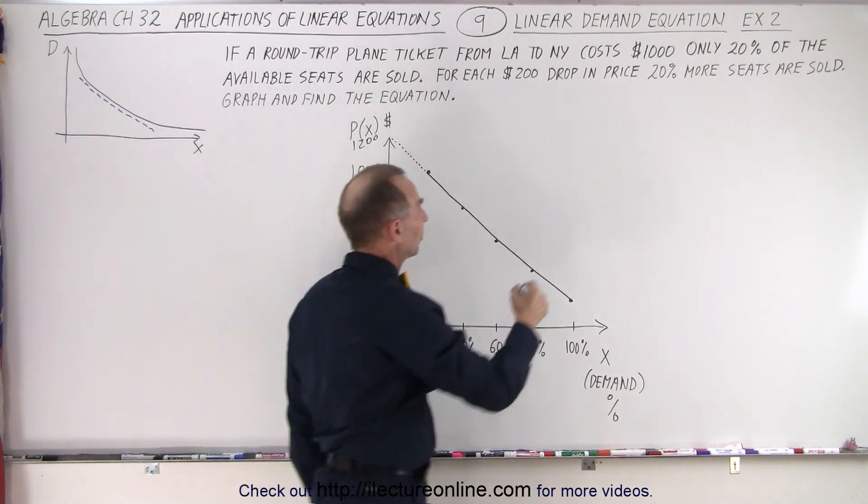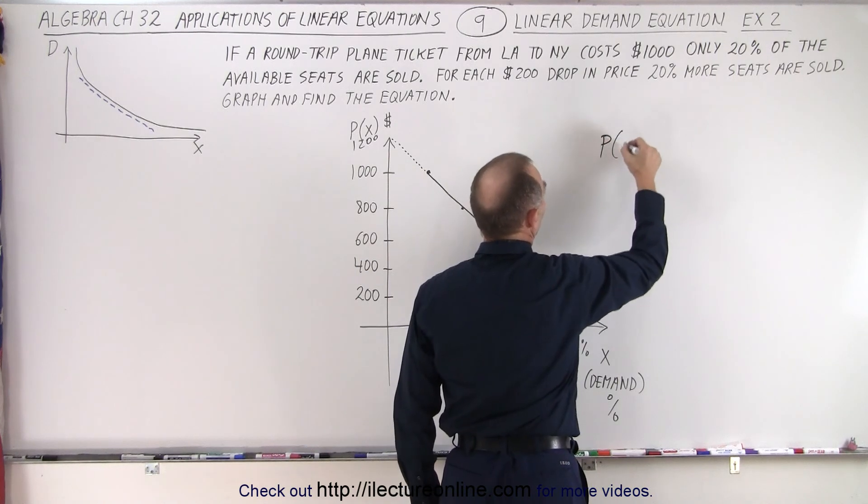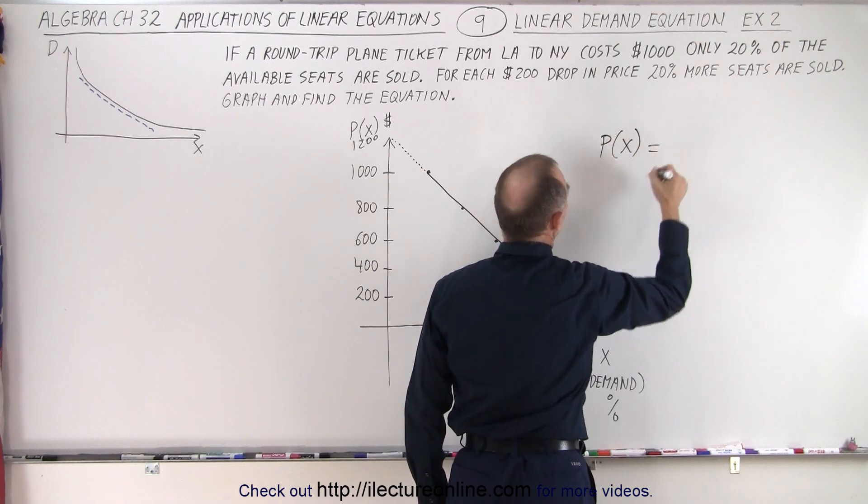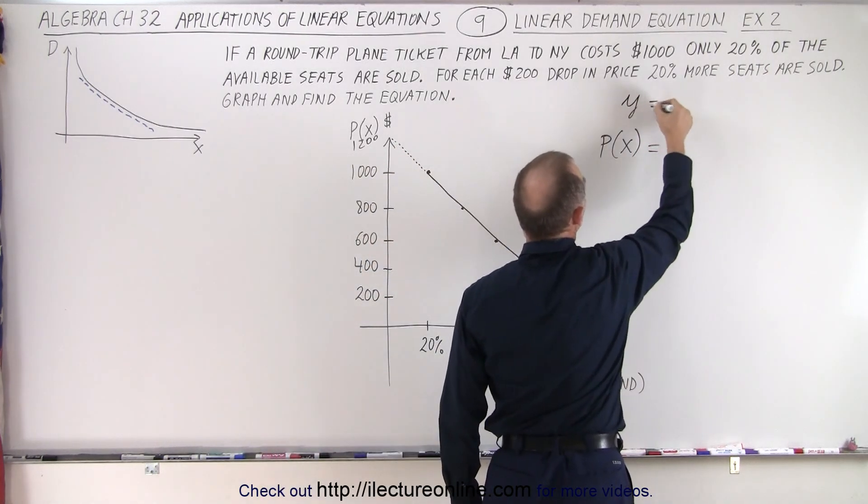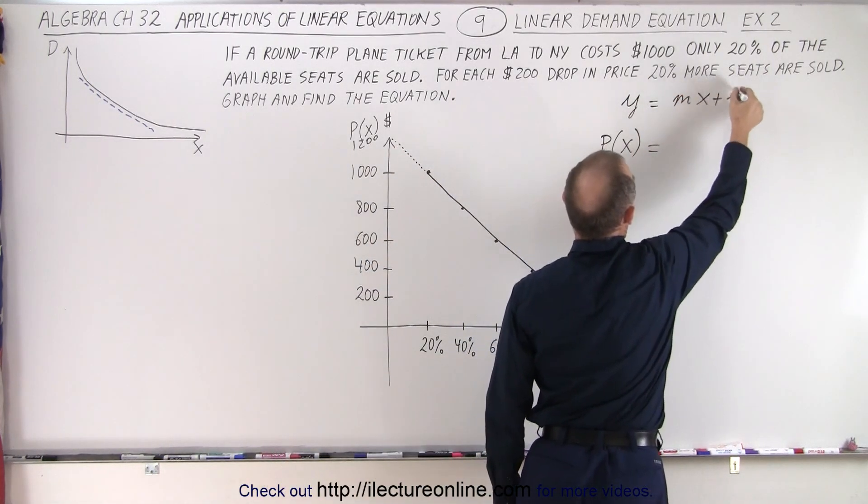So we need price as a function of x, x being the demand, is equal to... Now, notice we have the intercept. So let's write it like this, y equals mx plus b.